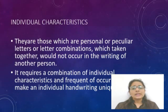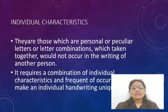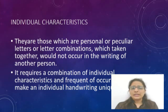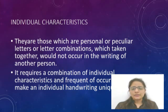Next is individual characteristics. They are personal or peculiar letters or letter combinations which, taken together, would not occur in the writing of another person. The way of writing is unique and belongs only to the individual who has written it. The manner of execution of letters is unique, and it requires a combination of individual characteristics and frequency of occurrence to make an individual's handwriting unique.